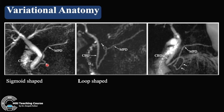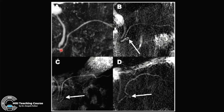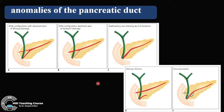Coming to variational anatomy: there is the sigmoid-shaped pancreatic duct, loop-shaped ducts, and another variety called meandering main pancreatic duct (MMPD), which has a reverse Z-type like a hairpin turn, and a loop type. Type A is the normal duct; B1 and B2 are loop types; C1, C2, and C3 are the reverse Z-types. These all drain normally into the major papilla and are also associated with idiopathic acute pancreatitis.